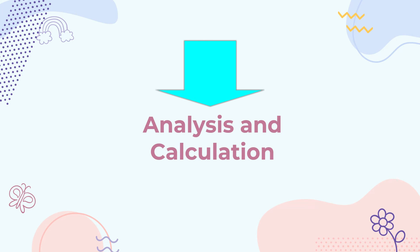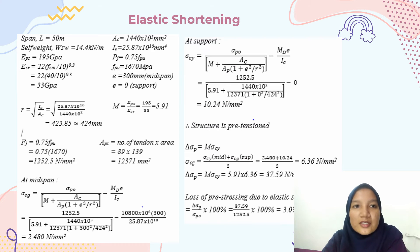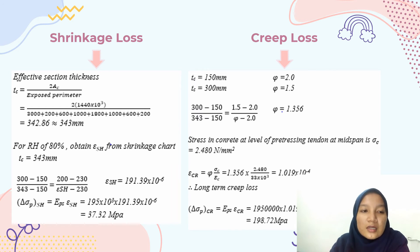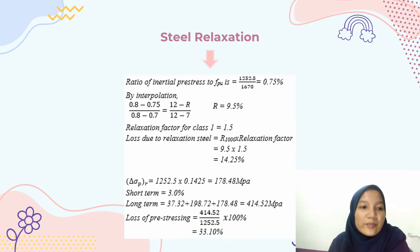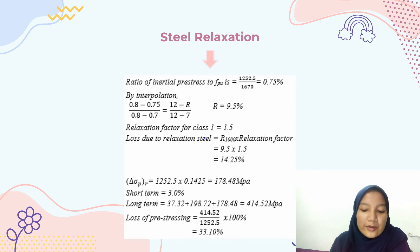Assalamualaikum and hi. My name is Tanok Lisa Aina Binti Ahmad Nadeh. I will present the analysis and calculation for losses. The elastic shortening value obtained is 37.99 N/mm². The short-term pretension loss is 3%, the shrinkage loss is 37 MPa, and the creep loss is 198 MPa. The total prestress loss obtained is 440 MPa. The percentage loss of pretension for short-term is 3% and for long-term is 33%.